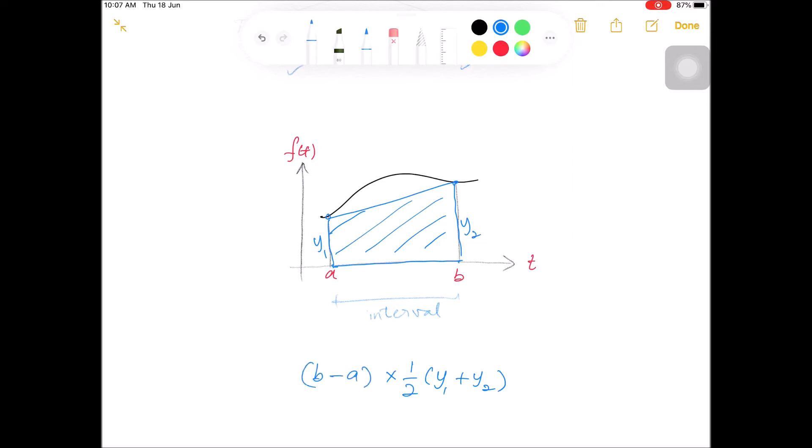In fact, we can interpret this formula as the width times the average height, which is very similar with the formula for the area of a rectangle with times height, except the height is replaced with the average height.